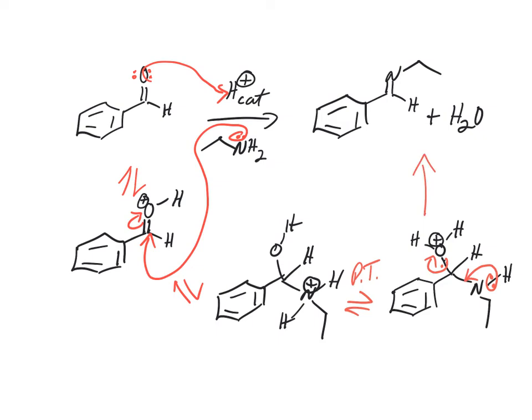There are ways to drive this reaction by removing water. A Dean-Stark trap is one of the things you can use to remove water. You can also use a drying agent like we use in lab — sodium sulfate, magnesium sulfate. That would help shift equilibrium. This is really an equilibrium reaction, so removing water helps shift it towards products. You could also add a lot of amine — that would also help shift the equilibrium. Remember those ways to shift equilibriums.